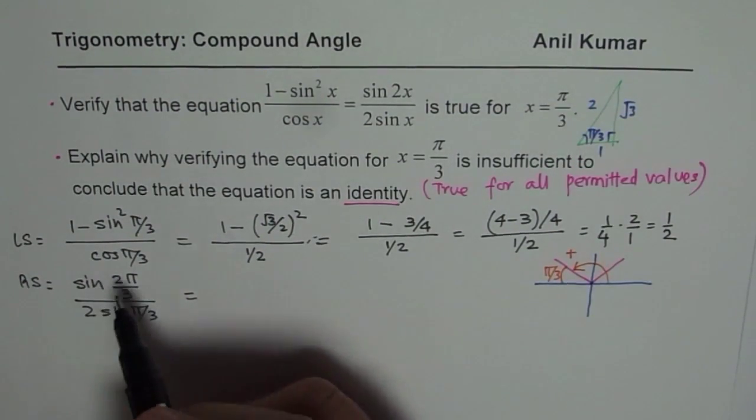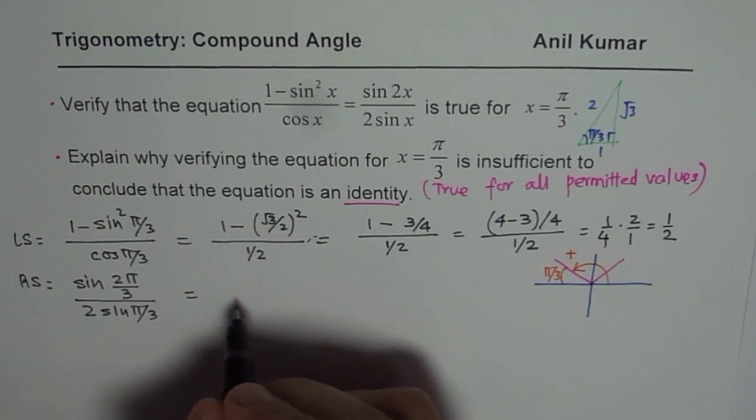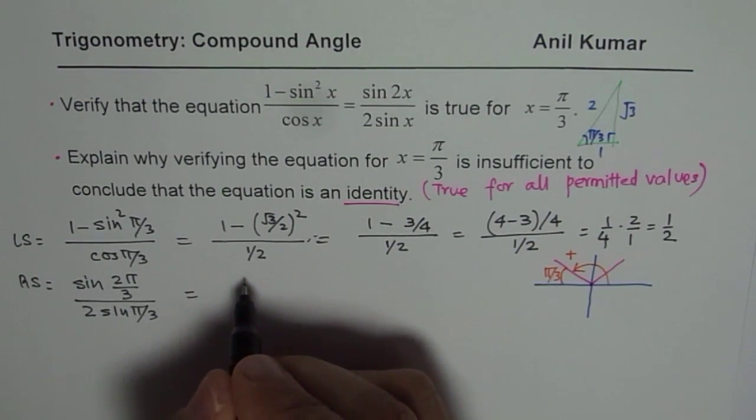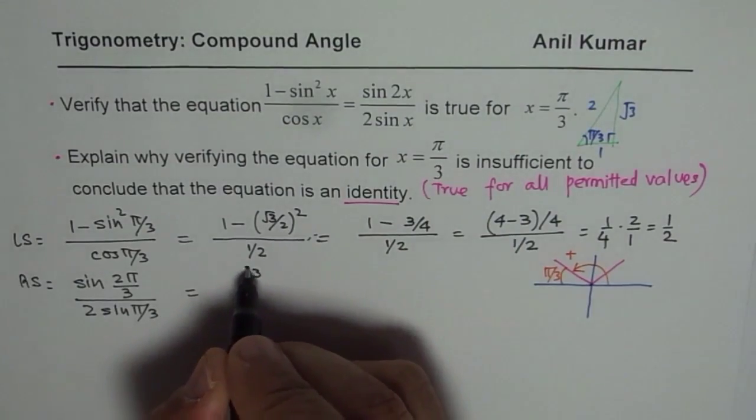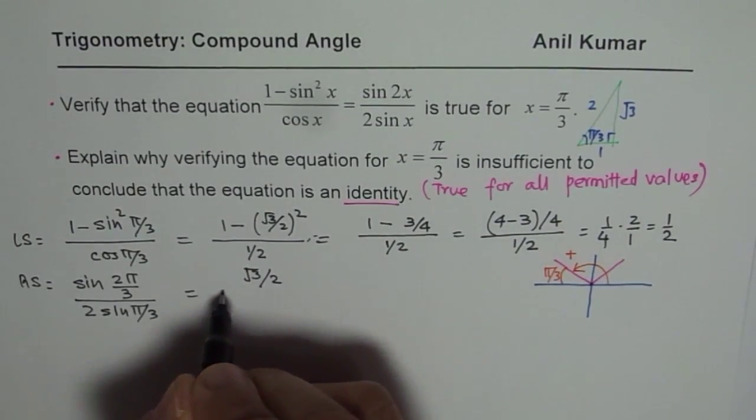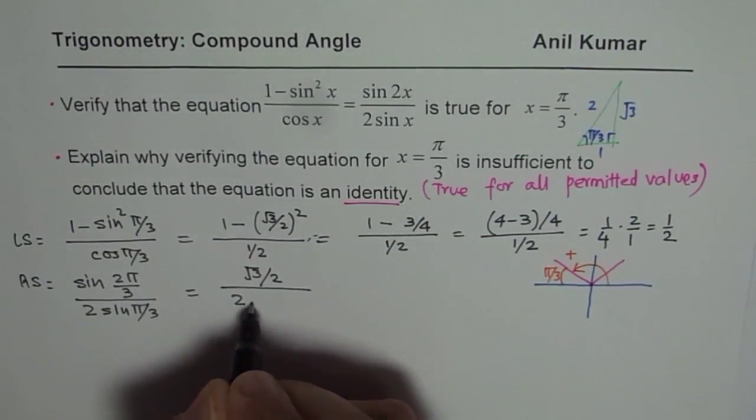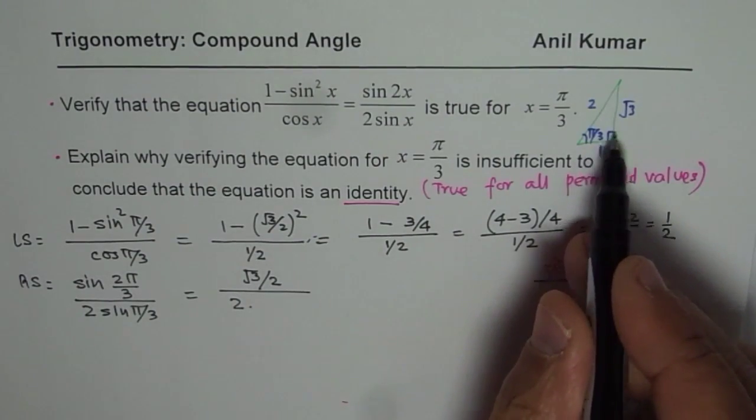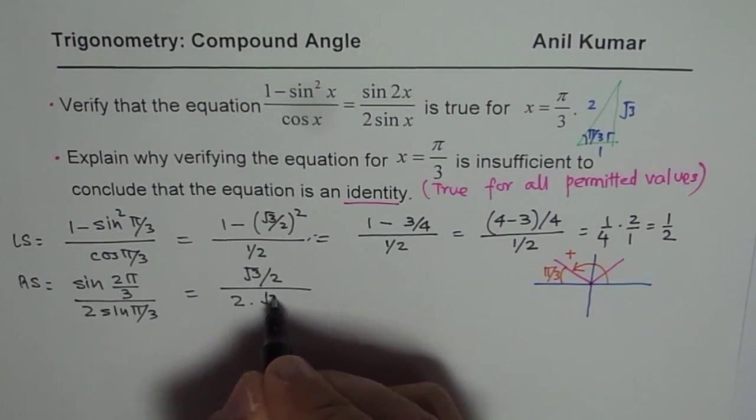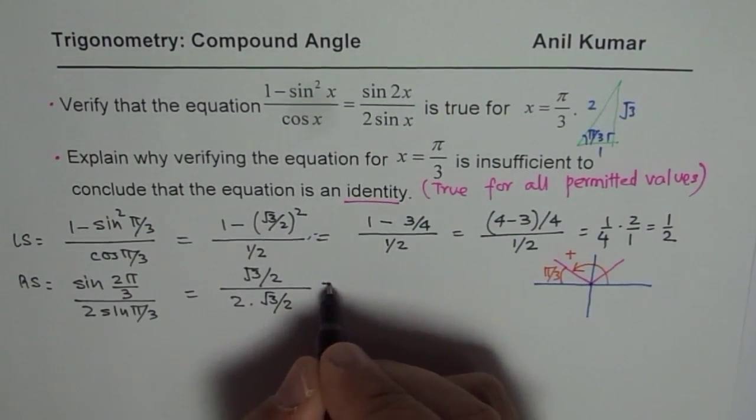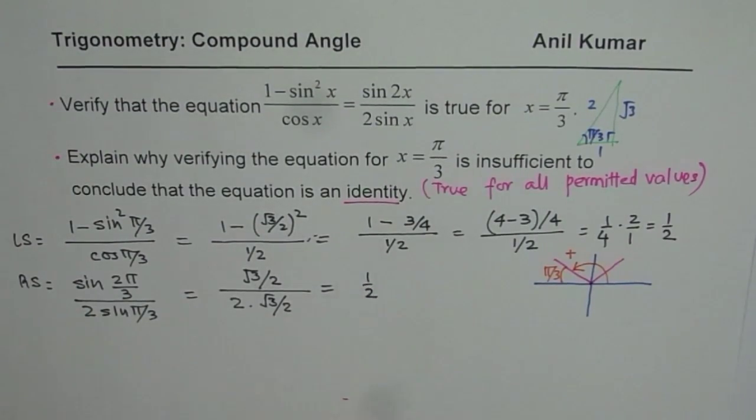So we can write this as sin(2π/3) = √3/2, divided by 2 times sin(π/3) = √3/2, and that gives you the answer as 1/2 again.